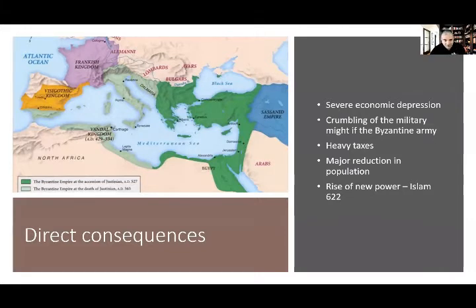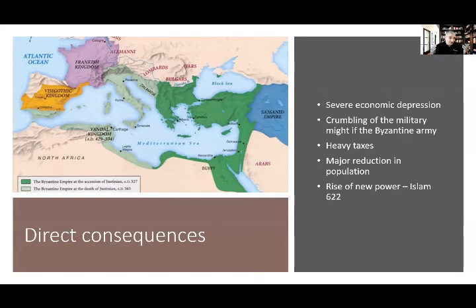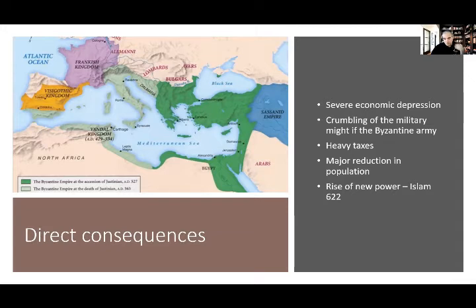What are the direct consequences of the Justinian Plague? First, there was a severe economic depression. In every major plague throughout history there is a severe economic depression because people block themselves in and try not to interact with others — sound very familiar, like coronavirus. We also saw the crumbling of the Byzantine army due to the reduction in population. From a mighty and strong empire, the population shrunk to a point where it was almost unable to defend its borders, and overall taxes increased because there were fewer people paying them.